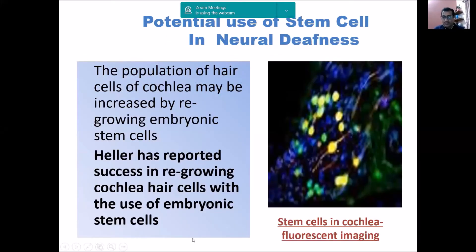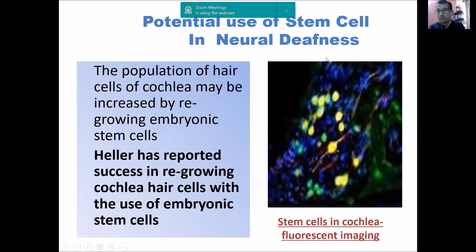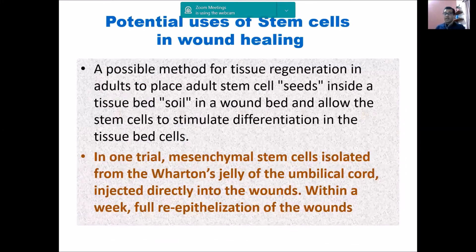For neural deafness, stem cells have been administered in the cochlea — we can see these are fluorescently tagged stem cells. There are many studies, and some have shown success in re-growing cells in the cochlea, leading to some level of improvement — again a very promising result.